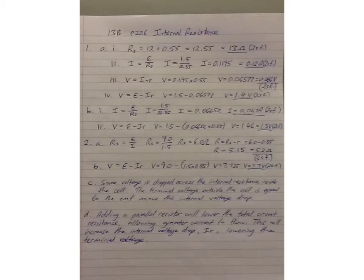Part C, explain why the terminal voltage is less than the EMF. What I've written here is some voltage is dropped across the internal resistance inside the cell. The terminal voltage outside the cell is equal to the EMF minus this internal voltage drop.